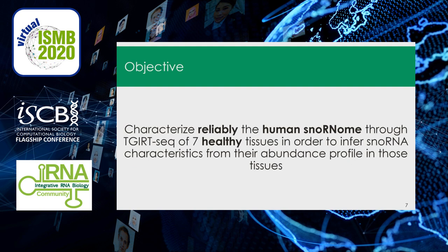The objective of my project is to reliably characterize the human snoRNAome across seven healthy human tissues, in order to infer snoRNA characteristics from their abundance profile or patterns in those tissues.